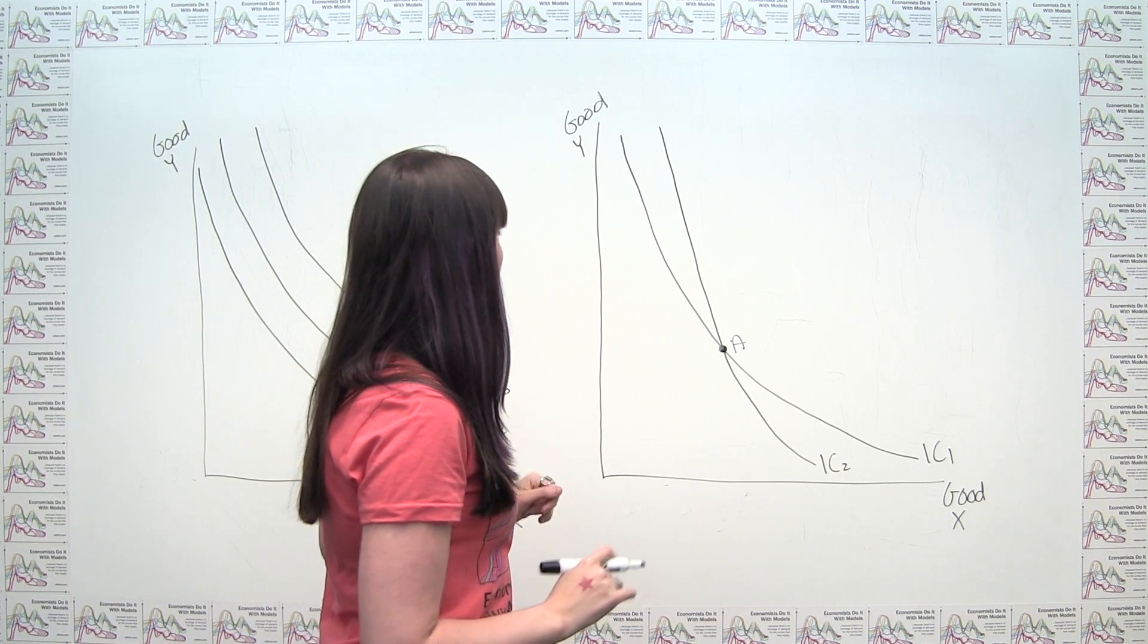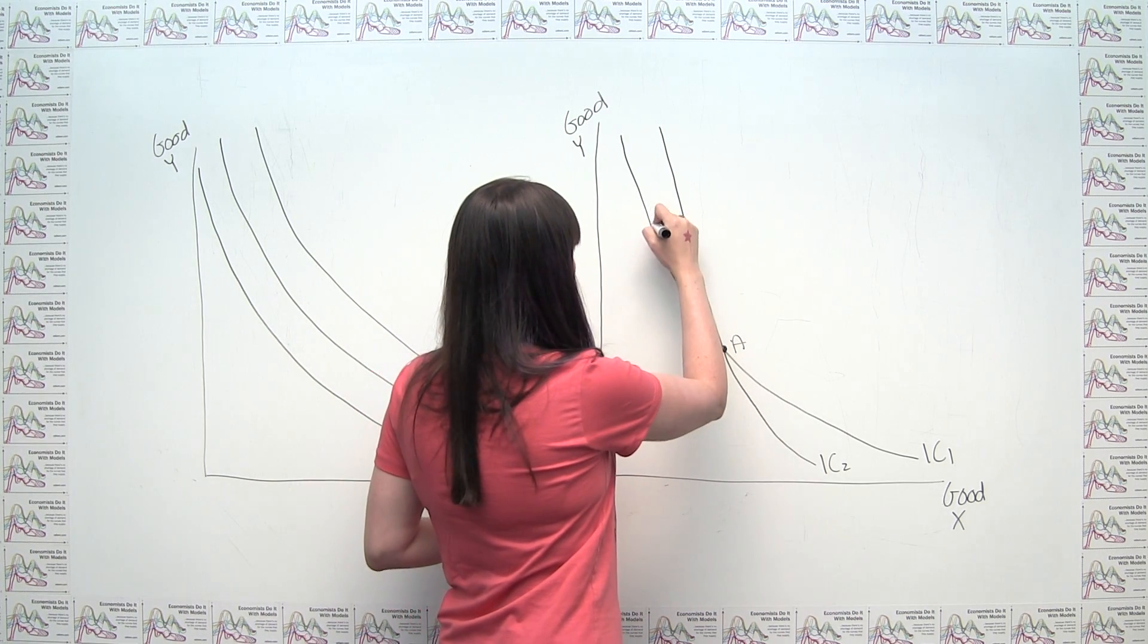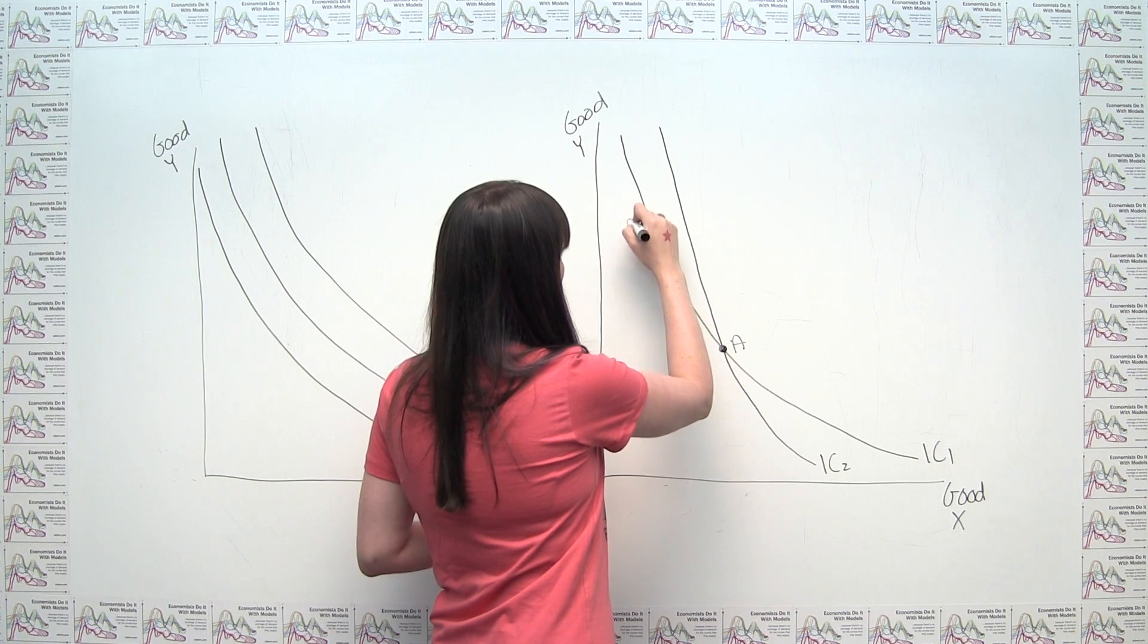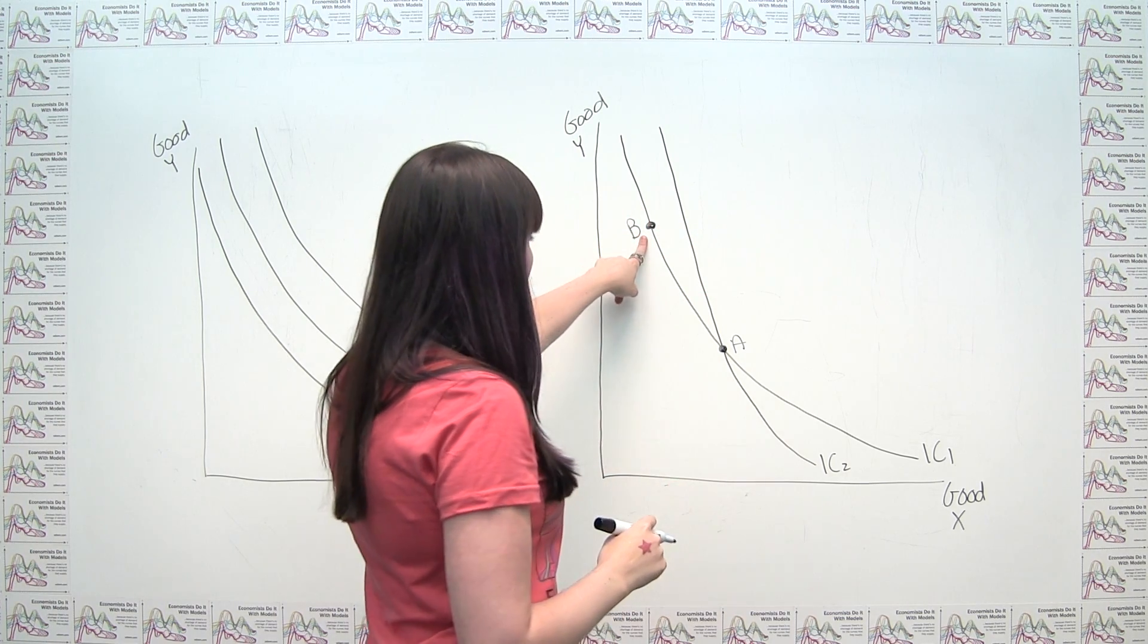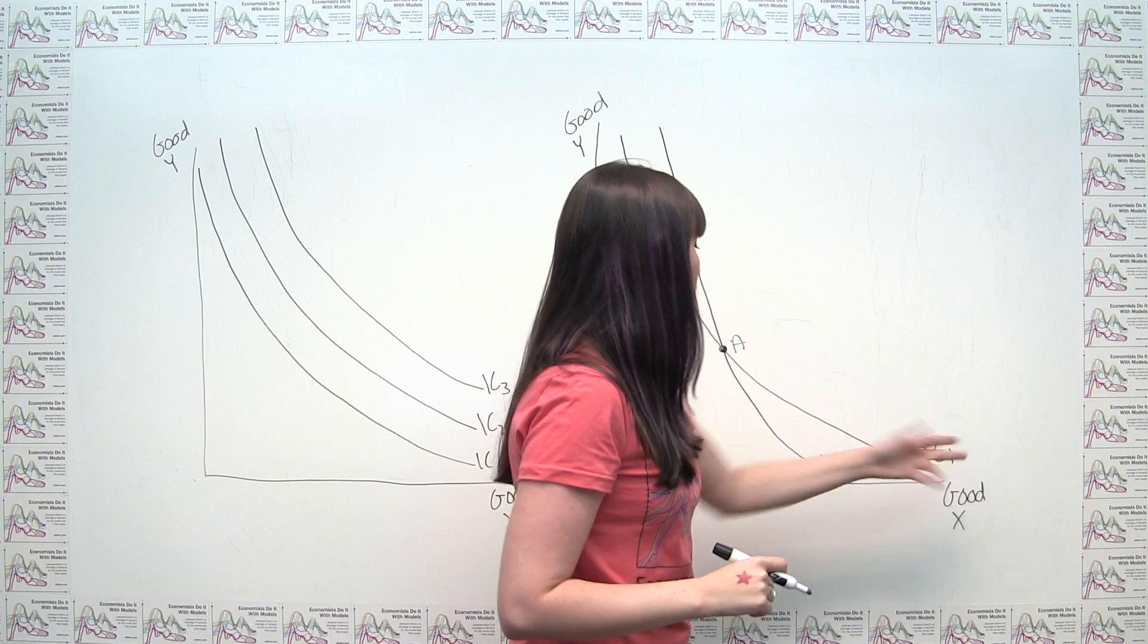The second point that I'm going to label, let's call it point B, is just a randomly chosen point somewhere on the first indifference curve, which I call IC1.